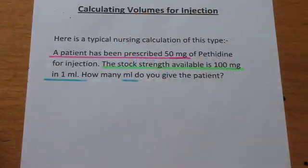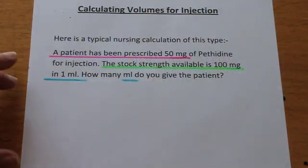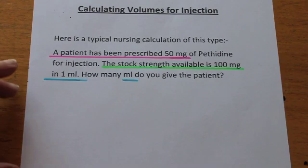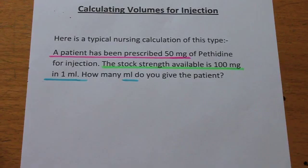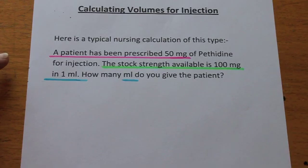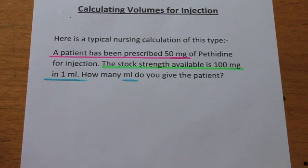Hello, my name is Julie Kevil and I'm a numeracy specialist at Middlesex University. This tutorial is about calculating volumes for injection. Here's a typical nursing calculation of this type: a patient has been prescribed 50mg of pethidine for injection. The stock strength available is 100mg in 1ml. How many mls do you give the patient?